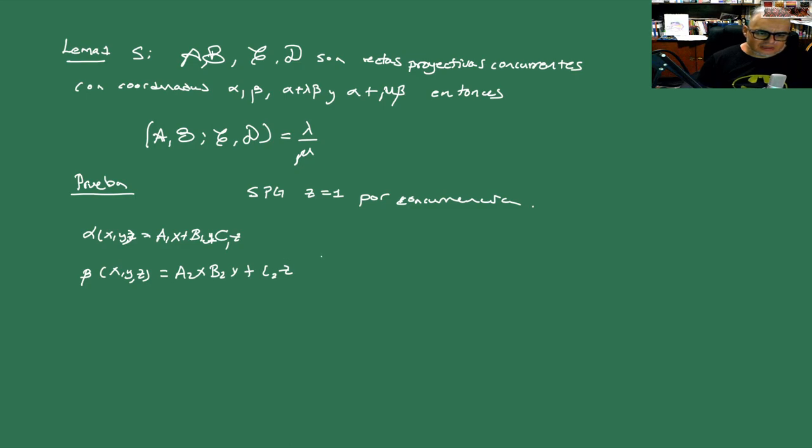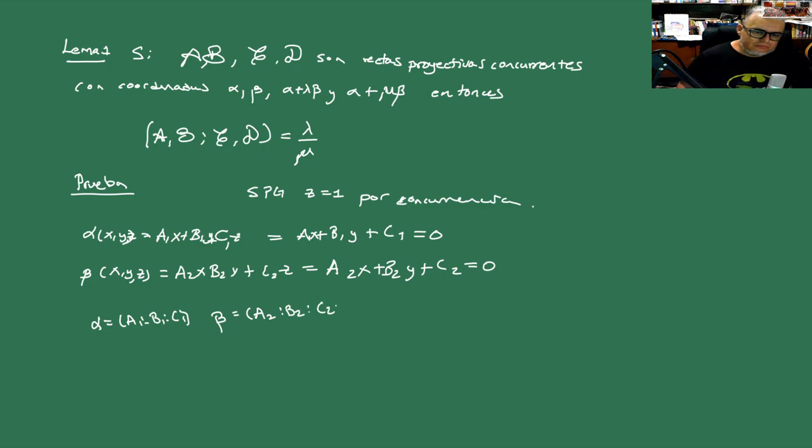Entonces, esto se vuelve A1X más B1Y más C1, y esto A2X más B2Y más C2. Igual es a cero, que es el lugar que determinan los ceros de esos polinomios. Ahora entonces, ¿quiénes son alfa y beta? Pues alfa le vamos a llamar simplemente a A1B1C1. Y beta es la correspondiente con subíndices 2.